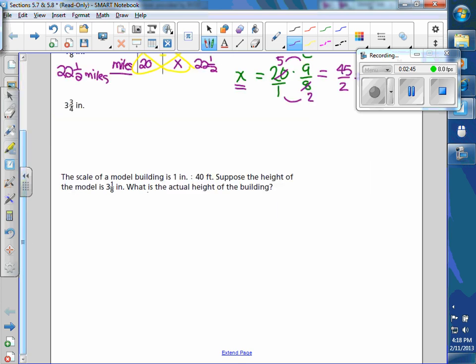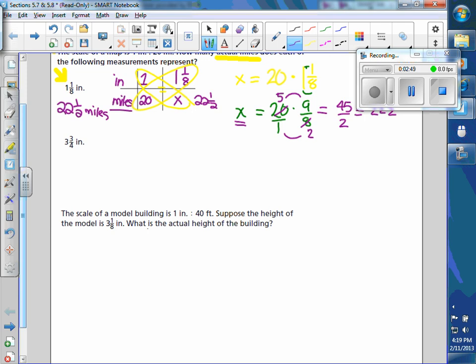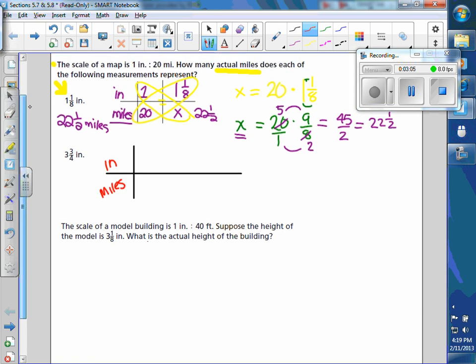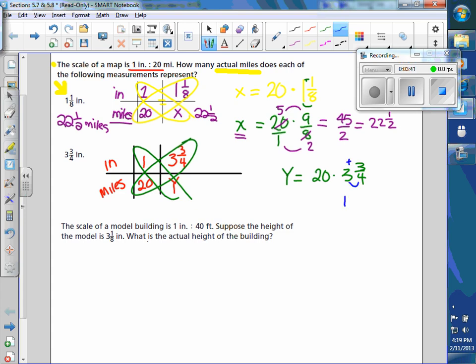Let's just practice one more example, same idea, you go through the same process, so we have inches and miles, and we still are going to use the same scale of 1 inch representing 20 miles. We want to figure out how many miles does 3 and 3 quarters inches represent, so I'll call that y. So again, we're going to set up another ratio or proportion, so we know that y is equal to 20 times 3 and 3 fourths. And we're going to change 3 and 3 fourths. 3 times 4 is 12, plus 3 is 15, so that's 15 fourths.